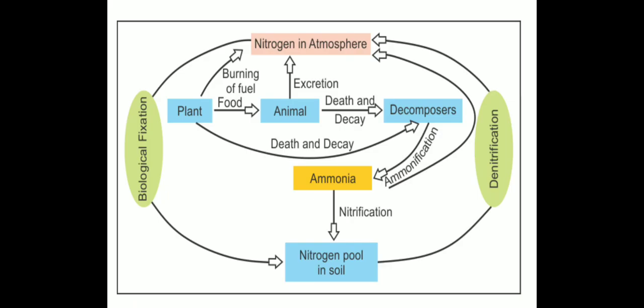You can see the nitrogen cycle here. This is how the nitrogen cycle works. Nitrogen in the atmosphere first undergoes fixation, then the nitrogen pool builds up in the soil — a large amount of nitrogen collects in the soil. Then denitrification occurs and the nitrogen is returned back to the atmosphere.